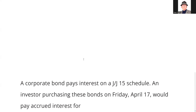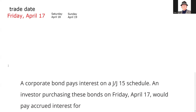An investor is purchasing these bonds — you play purchaser, I'll play seller. You're going to buy them on Friday, April 17th; that's when we agree to terms. Settlement is when ownership actually changes hands. The Uniform Practice Code standardizes practices within the securities industry, and regular way settlement is T plus one — one business day after the trade date. Saturday and Sunday are not business days; a business day is any day the New York Stock Exchange is open.